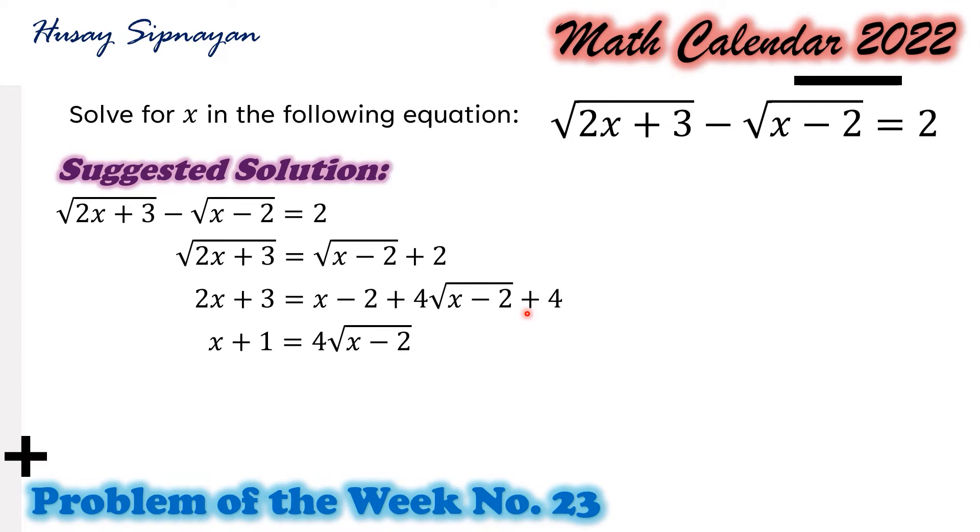Combining similar terms, we get x plus 1 on the left hand side. That is 2x minus x, and 3 plus 2 minus 4 equals positive 1. So we have x plus 1 on the left hand side, and on the right hand side we have 4 times the square root of x minus 2.